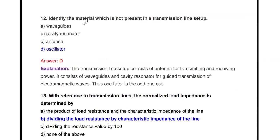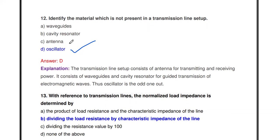Identify the material not present in a transmission line setup. The options are waveguides, cavity resonator, antenna, and oscillator. The oscillator is not used in the transmission line setup. In a transmission line setup, we use waveguides, cavity resonators, and antennas for transmitting and receiving signals. The oscillator is not present in the transmission line setup.